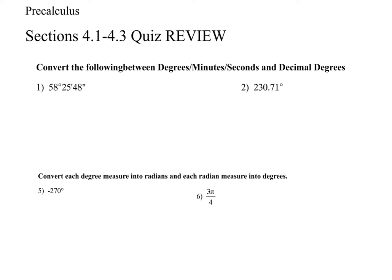For conversion when you have minutes and seconds and you're converting to degrees with decimals, you need to divide. So 58 is going to be your whole number, 25 over 60 is going to be part of your decimal, and 48 over 3600 will be your decimal. Add those decimals up and you should have gotten 58.43 degrees.